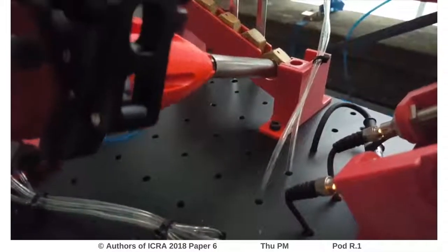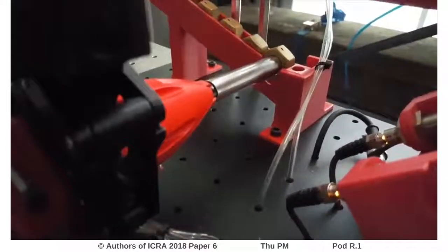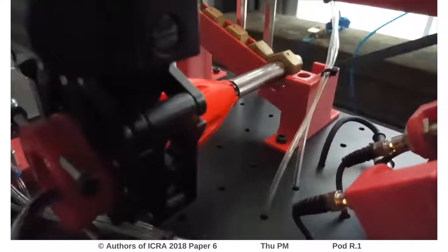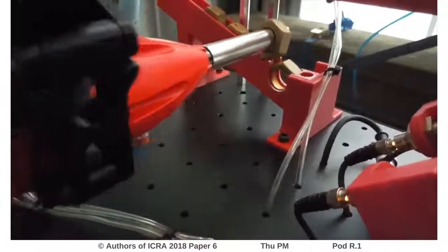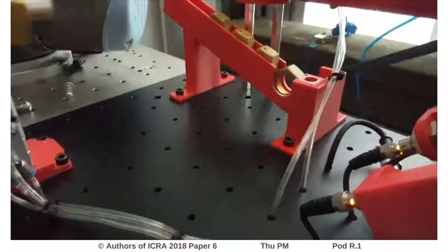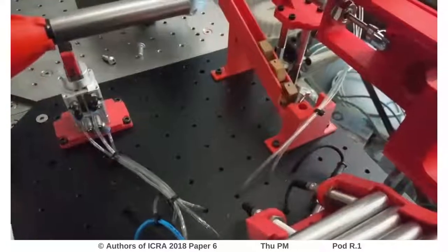This clip shows the learning process when optimizing the peg and hole operation where the union nuts are inserted onto the pin. This clip shows a successful iteration. The following clip shows a failure. The learning is based on 150 iterations.